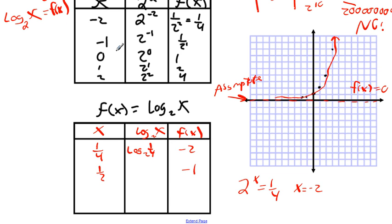Since these two are inverses, we just switch all the coordinate pairs. If 2^x gave us (0, 1), then log base 2 of x gives (1, 0). If 2^x gave (1, 2), then log base 2 gives (2, 1). And (2, 4) becomes (4, 2). And (3, 8) becomes (8, 3). Now let's plot those points: one-fourth and negative 2, one-half and negative 1, then (1, 0), (2, 1), (4, 2), and (8, 3).